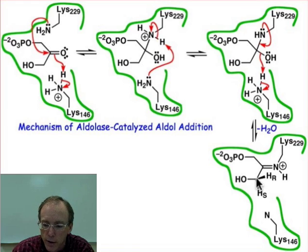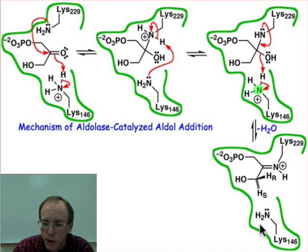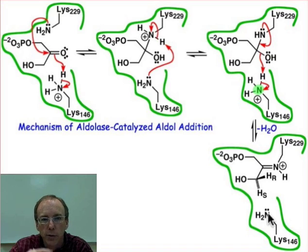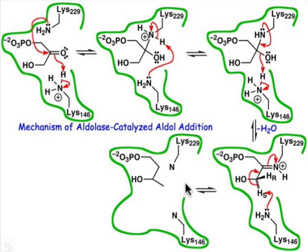That electron sink can enhance the acidity of the protons on this α carbon. And our lysine 146, after that general acid catalyzed function, is now in its neutral state so it can serve as a base. It's interesting how the lysine modulates — usually at every other position it's functioning as an acid and then a base. As a base, it can deprotonate one of those enantiotopic hydrogen atoms on the iminium ion, and it generates the enamine, which is nucleophilic at that position.